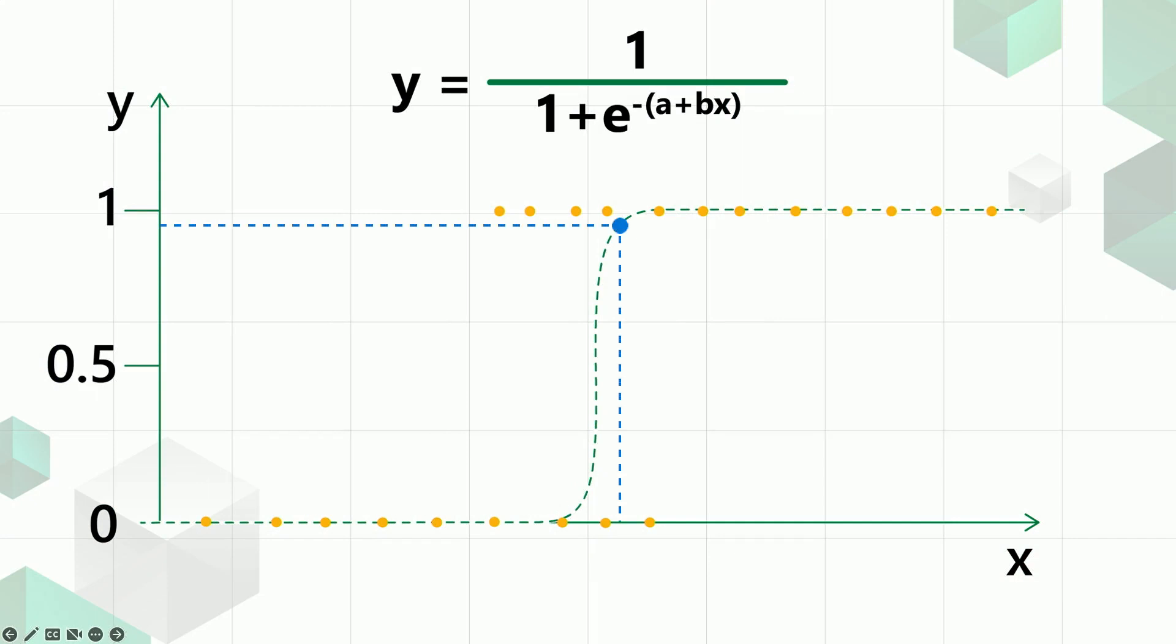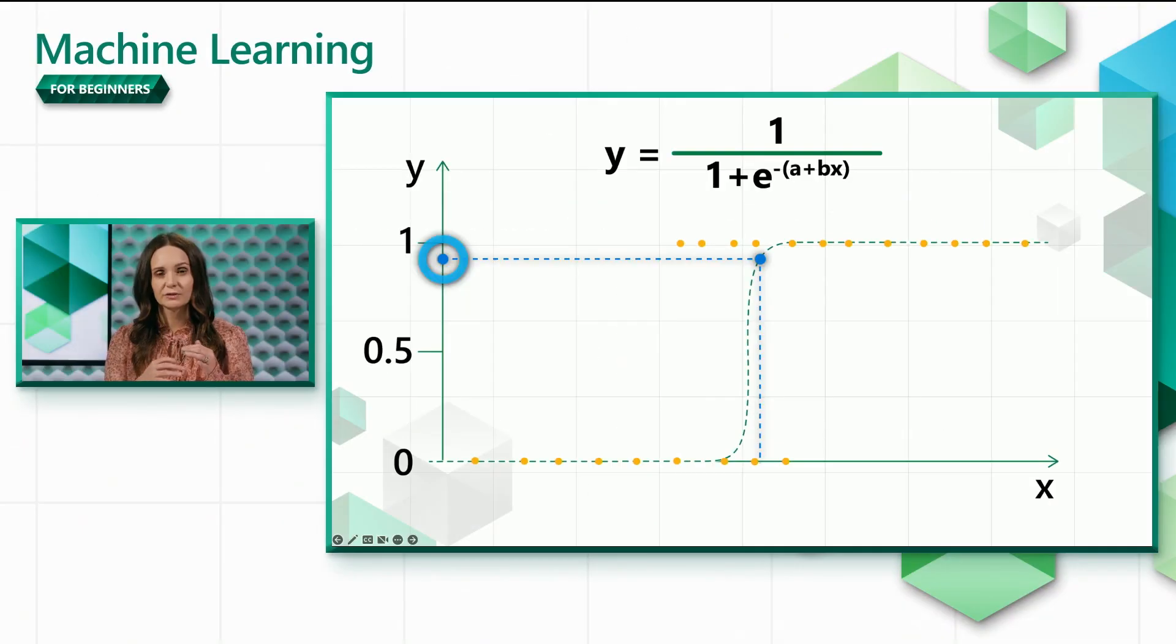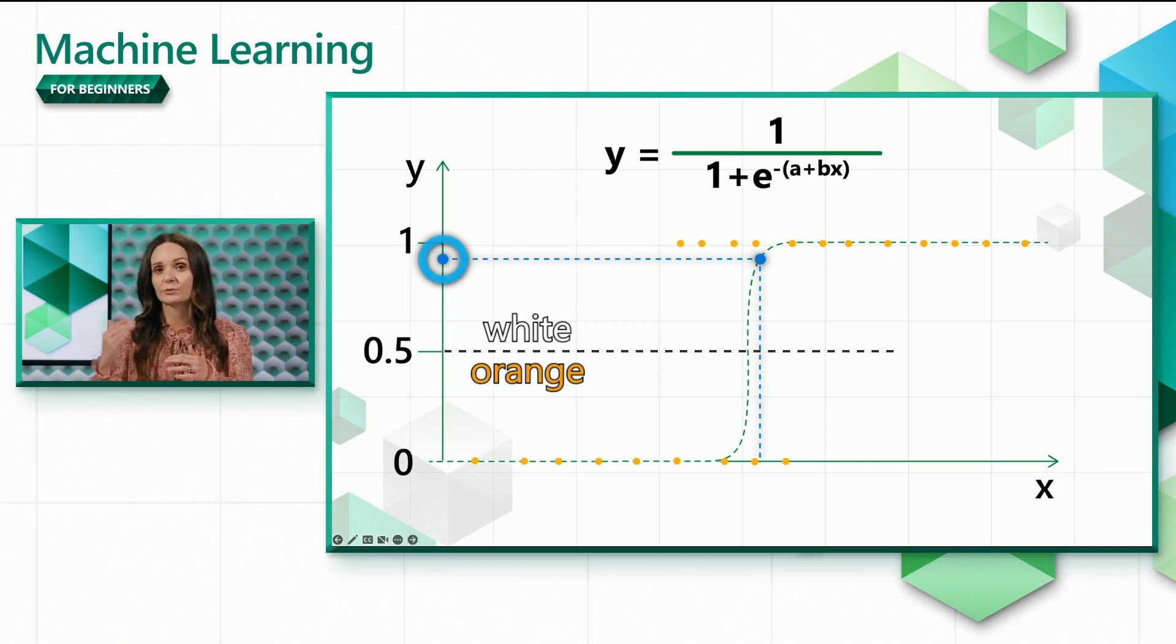The equation for the scenario is a bit more complicated, but the idea is simple. For a given pumpkin size, if the formula gives us a probability that is larger than a certain threshold, for example 0.5, we predict that the pumpkin is white. Otherwise, we predict that it's orange.